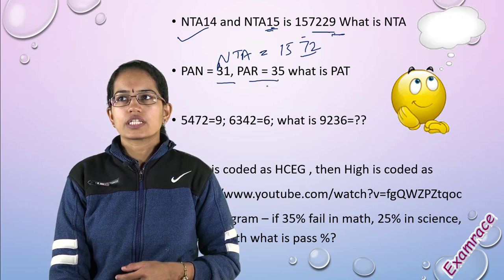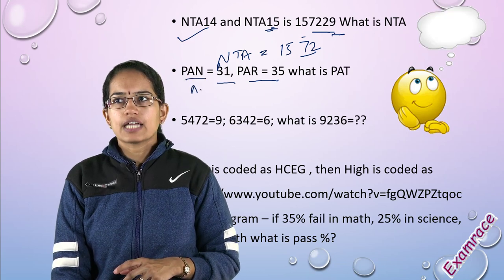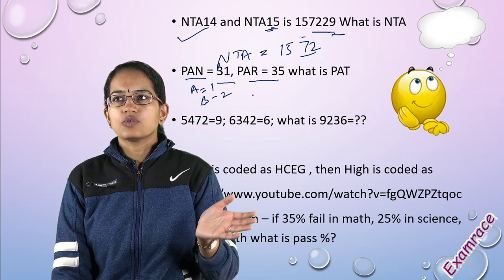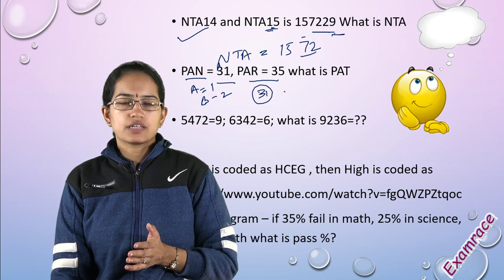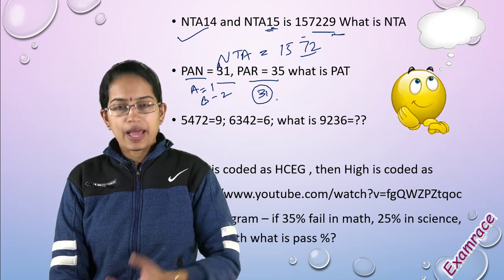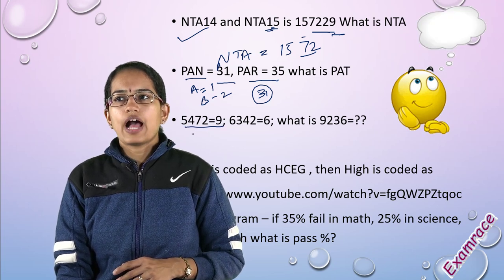Similarly, another set had questions where PAN and PAR are given, what is PAD? Here you simply understand A=1, B=2 and proceed. Then you add all the values. For PAN it comes to 31, similarly calculate for PAD and PAR.